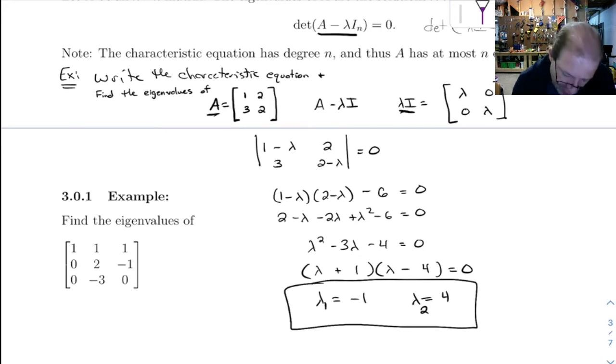All right. So notice something here. This was a 2 by 2 matrix. And it wound up having two eigenvalues. I said, write the characteristic equation. This is the characteristic equation here.